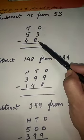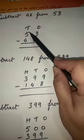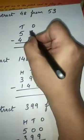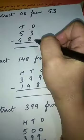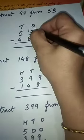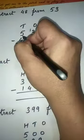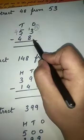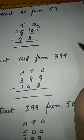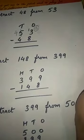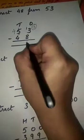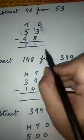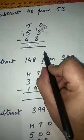What you will do? You will borrow 1 ten from the tens place. From here we borrow 1, so the ones digit becomes 13 and the tens digit 5 becomes 4. Now 13 minus 8: counting up — 9, 10, 11, 12, 13 — that means 5. And 4 minus 4 is 0. So the answer is 5.